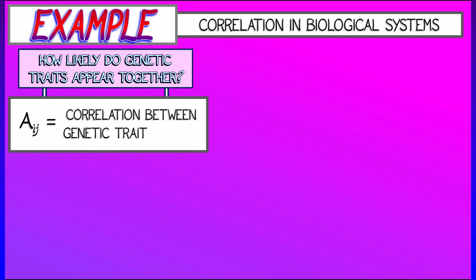You can build a matrix whose entries are correlations between genetic traits encoded by the row and the column number.